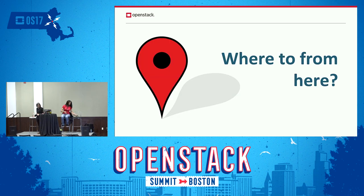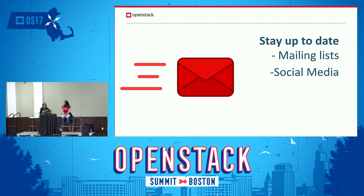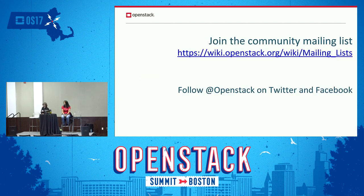Where do we go from here? We looked at the community structure, heard from a success story, and confirmed that we can definitely get involved and it is possible. First thing: stay up to date. The best way to get started is to know what's going on — join the mailing list, follow OpenStack on social media. You might hear about a particular event happening in your local region, such as OpenStack Days — like the one coming up in Melbourne on the 1st of June. The community mailing list is where a lot of community discussion happens, and the user group newsletter goes out on that feed. Follow OpenStack on Twitter and Facebook for another great news feed.